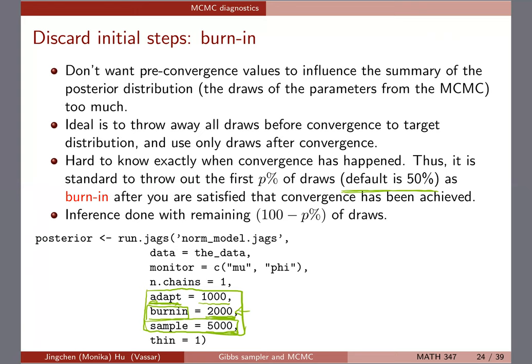If you think about what we did earlier without JAX — coding the Gibbs sampler yourself — you end up with 10,000 draws of mu and phi. You can manually chop off the first 50% as your burn-in. JAX is flexible and lets you choose the number of iterations for each part. In the demo: 1,000 for adapt, 2,000 for burn-in, and 5,000 for sampling. The results are summarized from those 5,000 iterations. It's important to discard the initial values so they don't influence the summary.